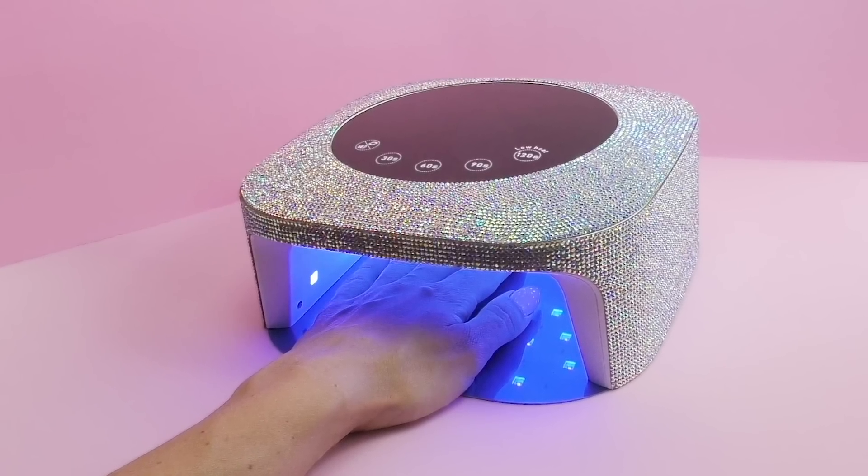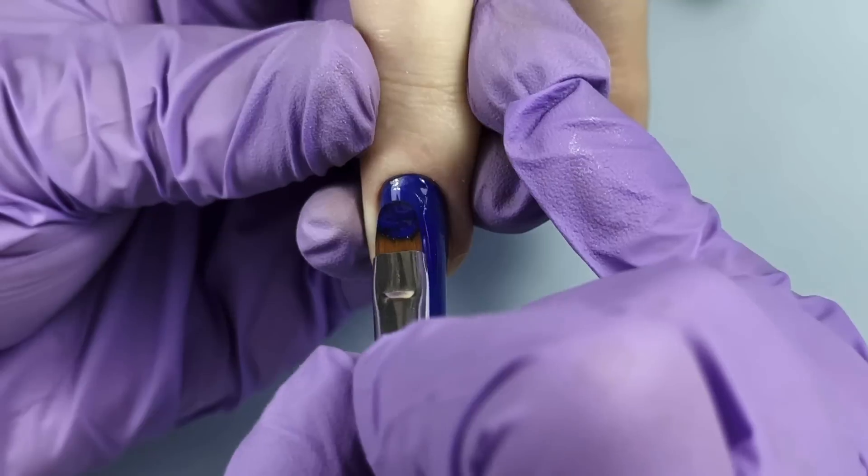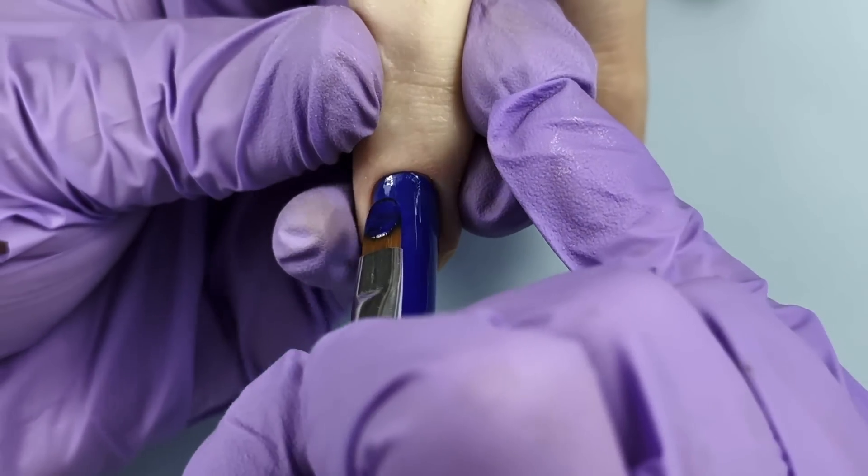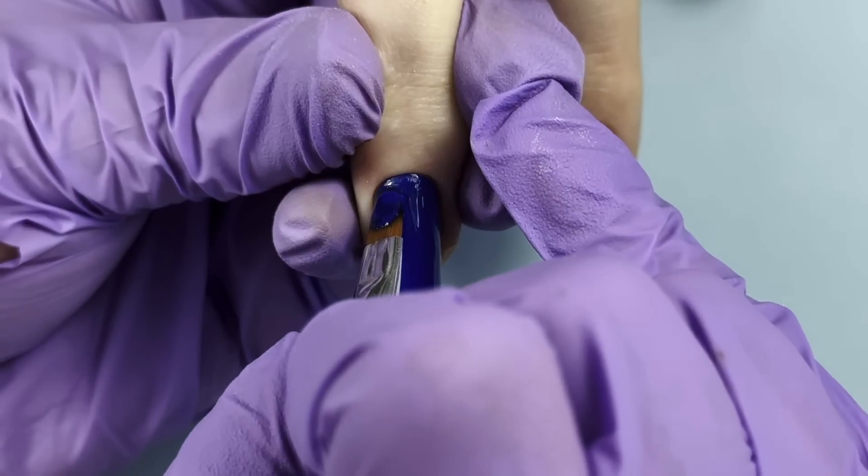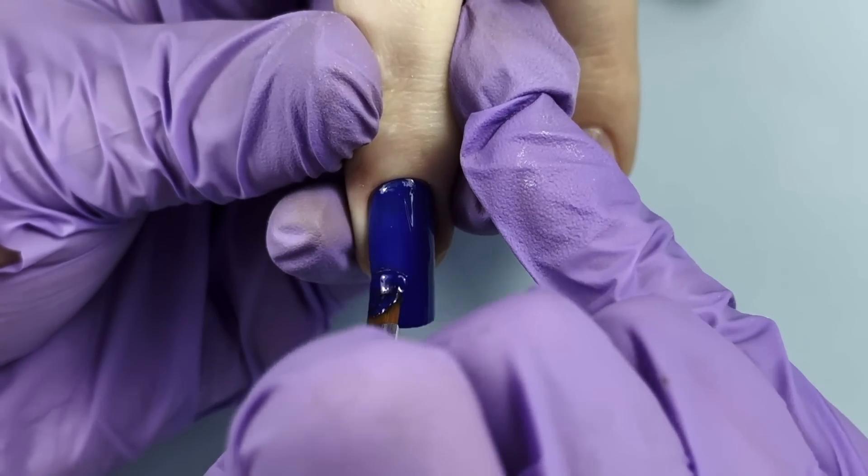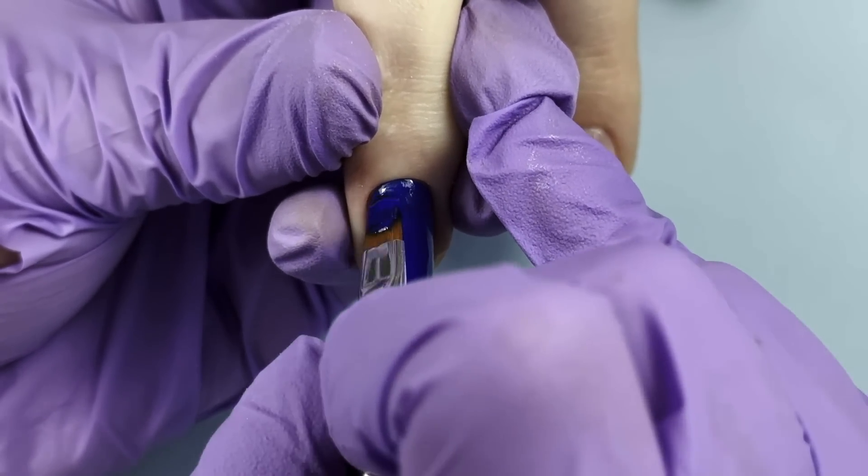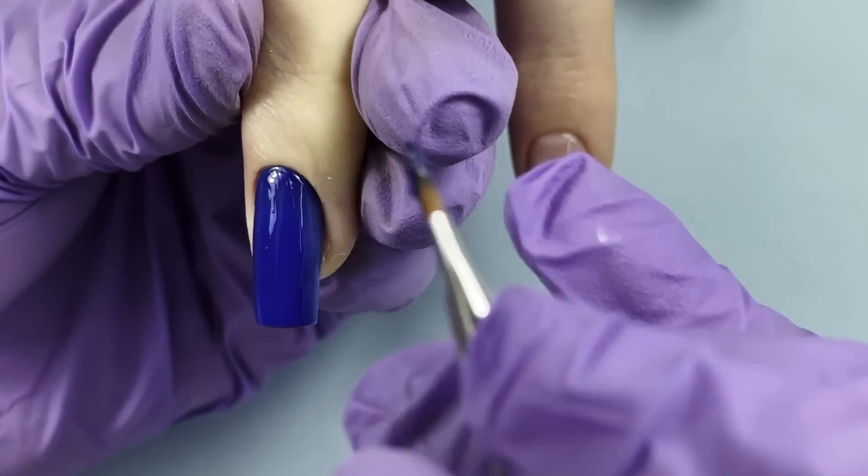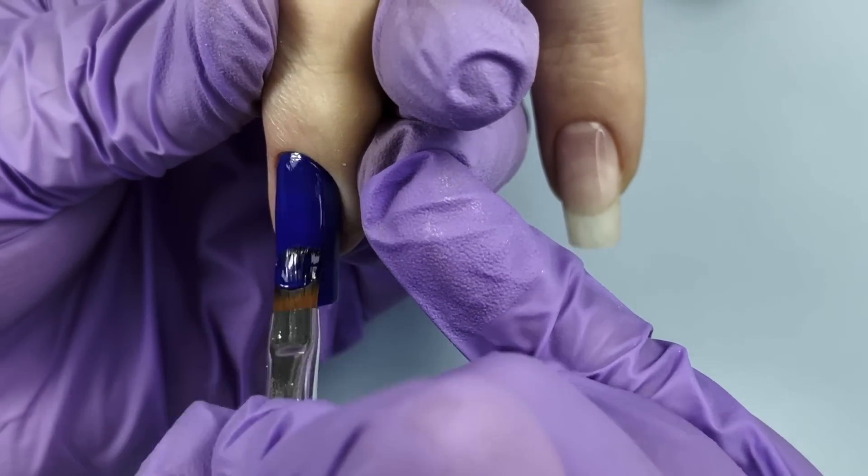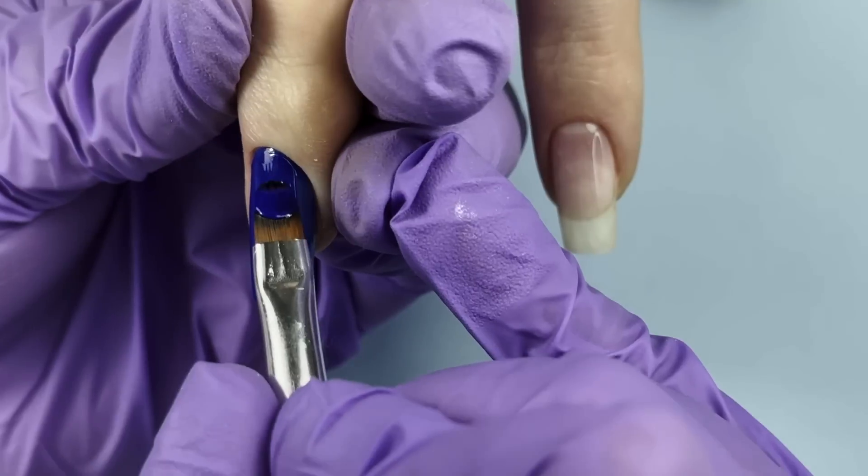Then we need to cure it for 60 seconds in LED lamp, and after that we are going to apply the second one. By the way, I think it looks pretty with one coat already, but if you would like to have a darker and more rich shade you can apply the second coat. When you apply solid cream gel polish you don't really need much, so do not pick up too much of the gel.